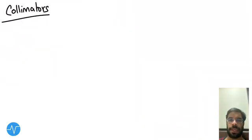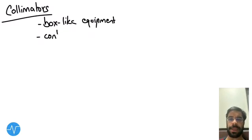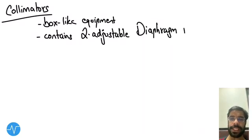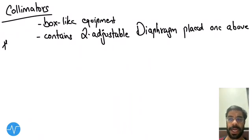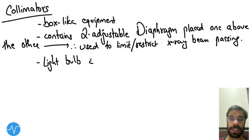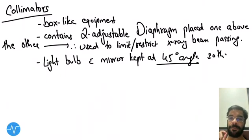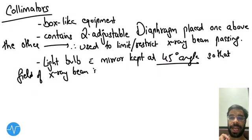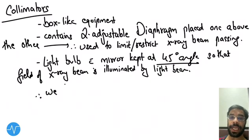The third beam restricting device is the collimator. It is a box-like equipment that contains two adjustable diaphragms placed one above the other, which limit or restrict the x-ray beam. There is also a light bulb with a mirror kept at a 45-degree angle so that the field of the x-ray beam coming out is illuminated.